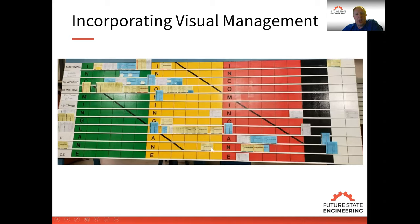Here's an example of visual management that I helped a company install in their business — it's their scheduling board, a visual scheduling board. The process steps are down the left-hand side. Each card represents a work order in the system, and different colored cards represent different product families. As the cards complete an operation they move down the board, and they move to the left as time moves on.